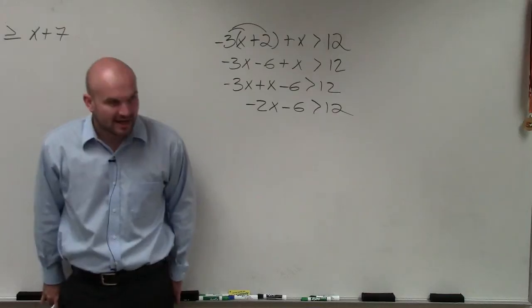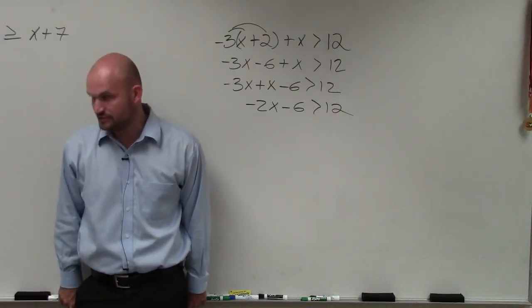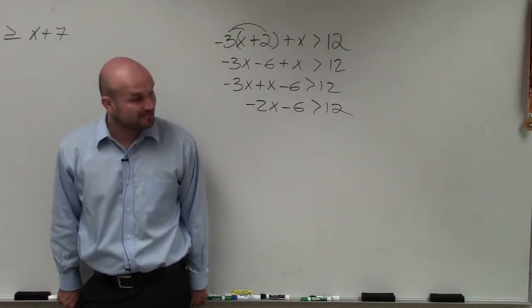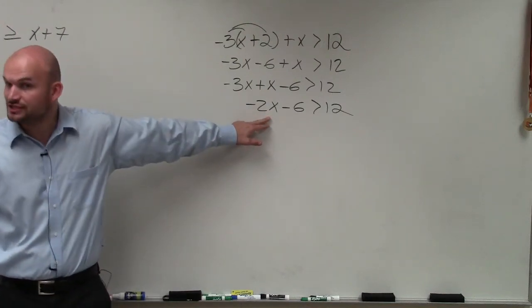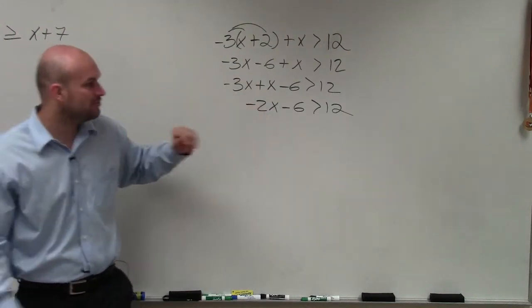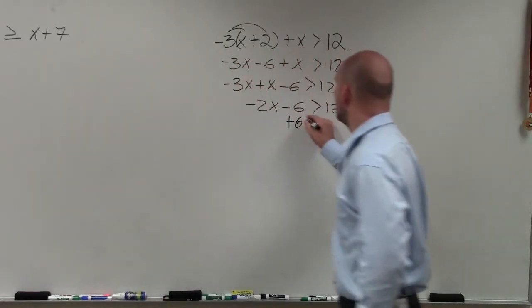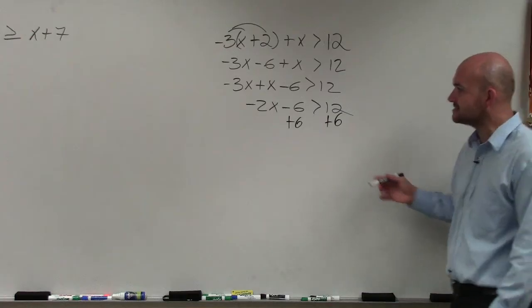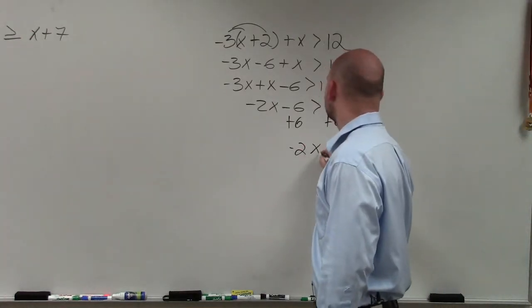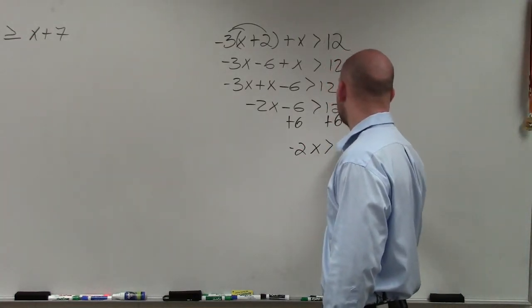Now, I have simplified it down to a two-step equation. When we simplify down to a two-step equation, we always look at our variable and say, I need to undo addition and subtraction, and then undo multiplication and division. So the first thing I'll undo is subtracting the 6 from my variable. So I do that by adding 6 on both sides. Then I have negative 2x is greater than 18.